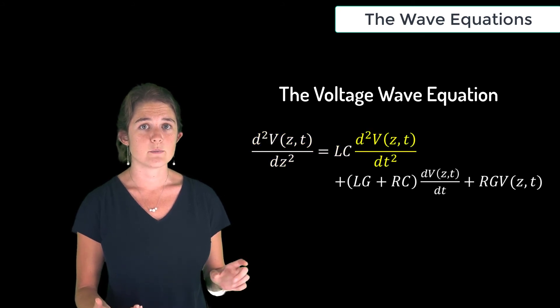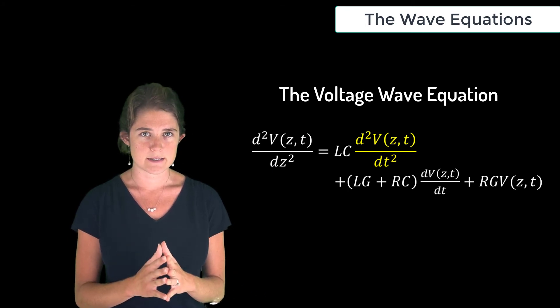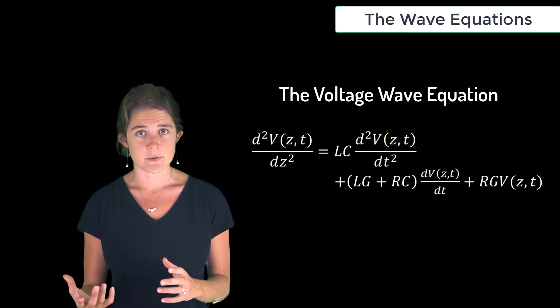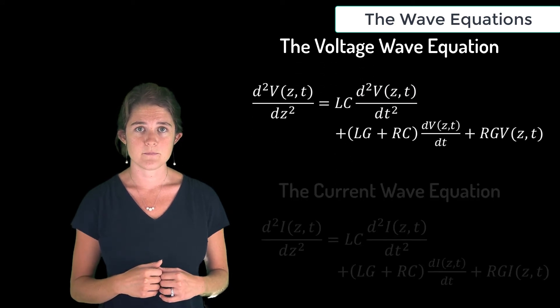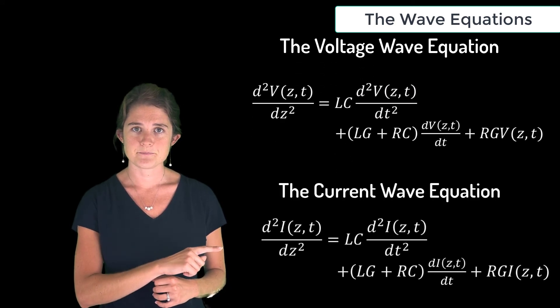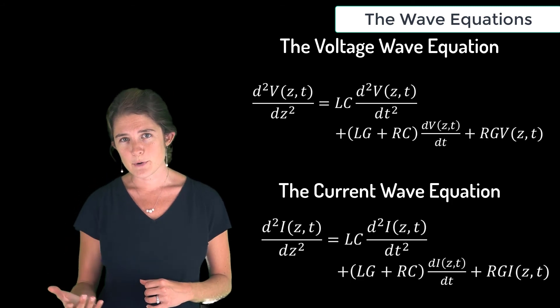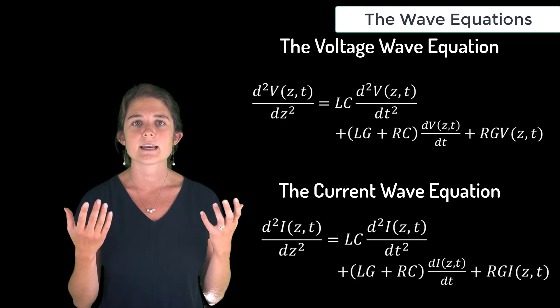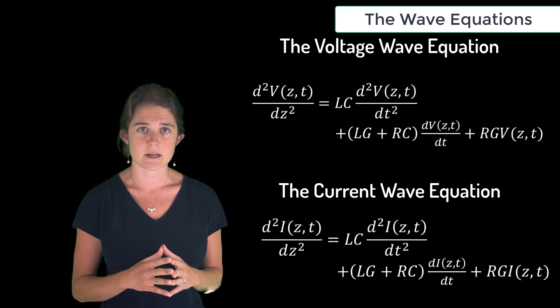We can follow exactly the same process, starting with the second telegraphers equation, to obtain the wave equation for current along a transmission line, which is given by this formula. Notice that this has exactly the same form as the equation for voltage, so both current and voltage must satisfy the same differential equation along the length of a transmission line.